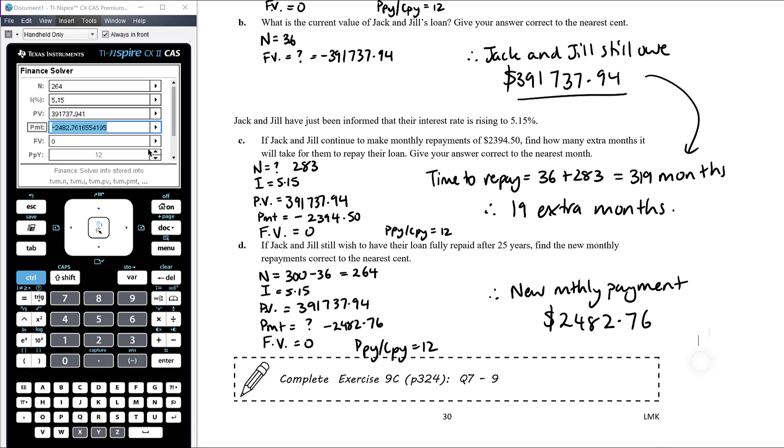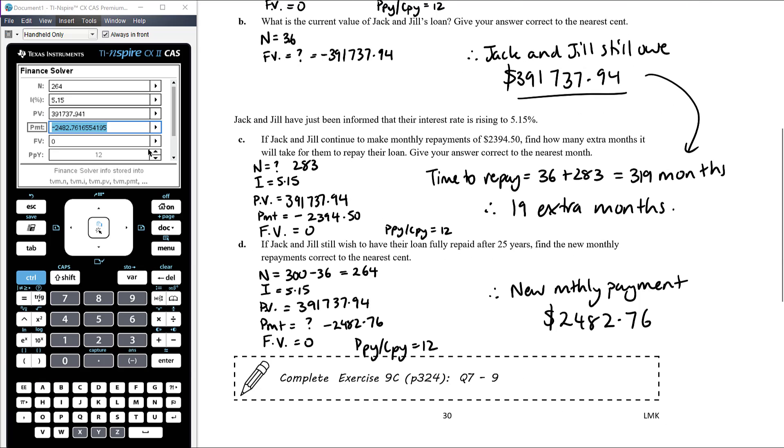Okay, exercise 9C, questions 7, 8 and 9. So finishing off that exercise with using the finance solver, but now some problems with changing conditions along the way.